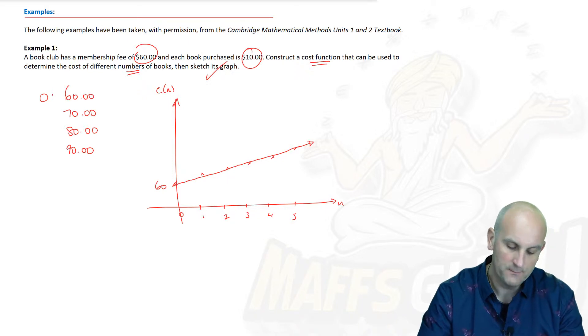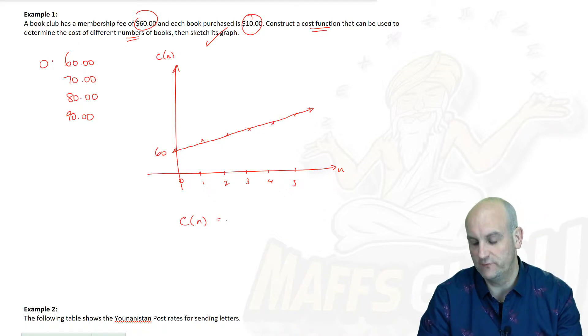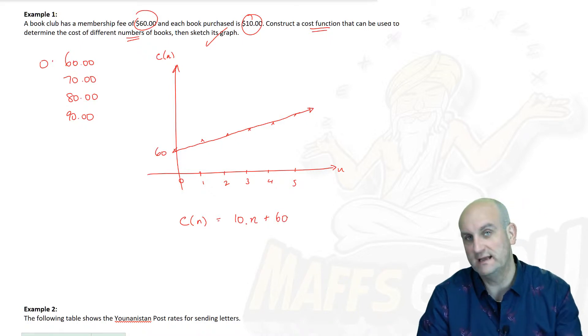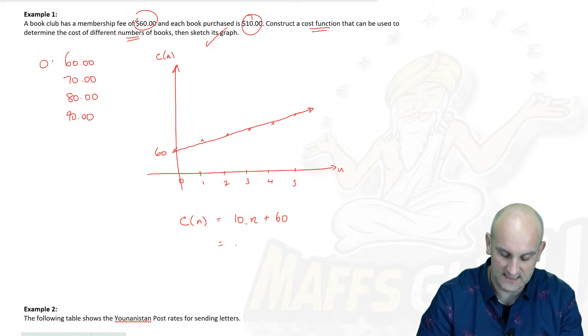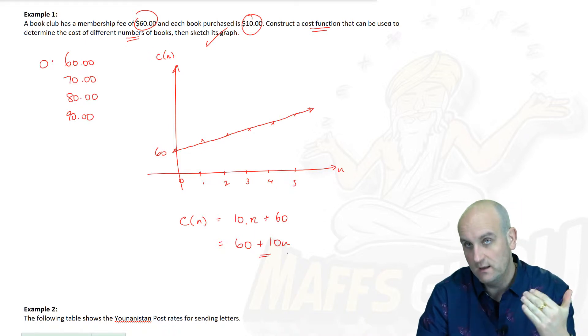There is my graph. I've sketched it, but it wants a cost function. It just wants you to write a formula that now describes that graph. We know that our form is y equals mx plus c. So if I work out the gradient, it's going to be 10 times my x value, which is n, and I'm going to add on to that 60. That would be perfectly acceptable. Interestingly, the textbook has it as 60 plus 10n. Either of those are absolutely acceptable because they are both correct. And lo and behold, there is my cost function. Linear. That was a linear relationship.